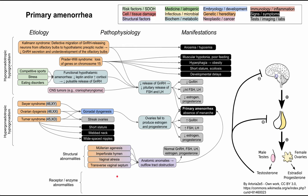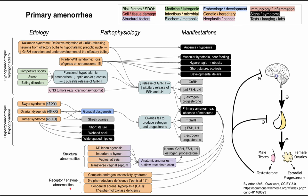Lastly, there are receptor and enzyme abnormalities that can also cause primary amenorrhea. These include complete androgen insensitivity syndrome, 5-alpha reductase deficiency (also called "penis at 12" disease), and congenital adrenal hyperplasia — specifically 17-alpha hydroxylase deficiency. These are all genetic or hereditary abnormalities affecting receptors or enzymes in the body.